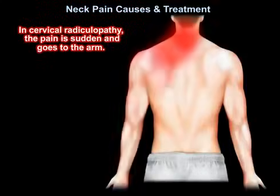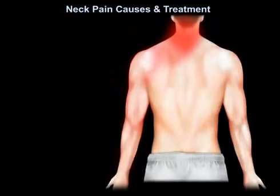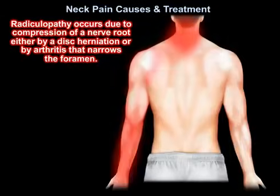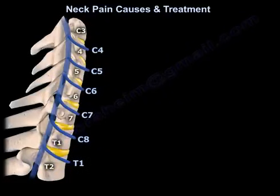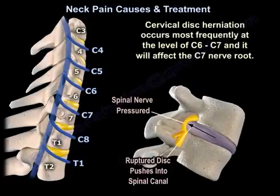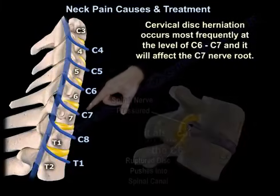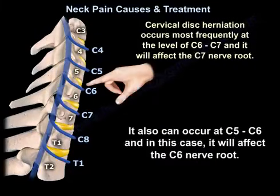In cervical radiculopathy, the pain is sudden and goes to the arm. Radiculopathy occurs due to compression of the nerve root, either by disc herniation or by arthritis that narrows the foramen. Cervical disc herniation occurs most frequently at the level of C6-C7, affecting the C7 nerve root. It can also occur at C5-C6, in which case it will affect the C6 nerve root.